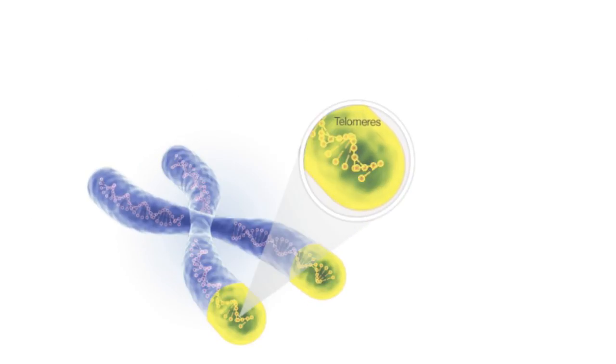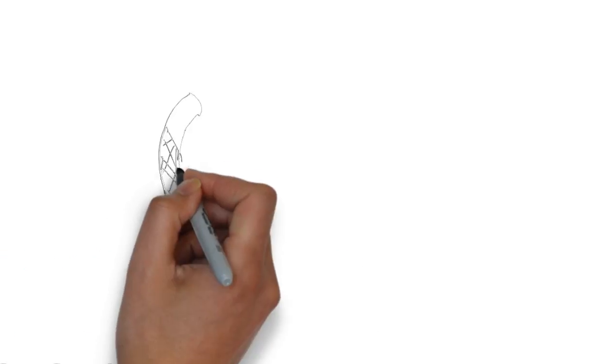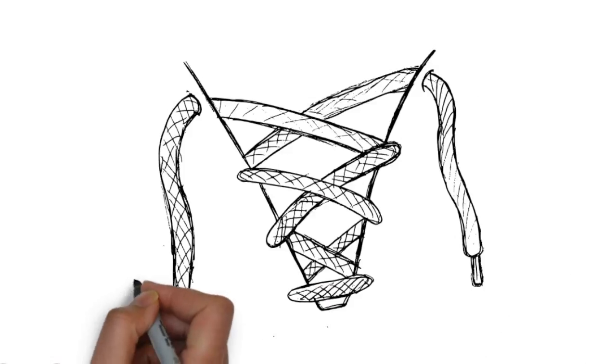Well, technically, the key is telomeres, non-coding segments of DNA with the sequence TTA-GGG. They can be compared to the plastic tips on your shoelaces. They cap the ends of your DNA so that they don't get worn down.